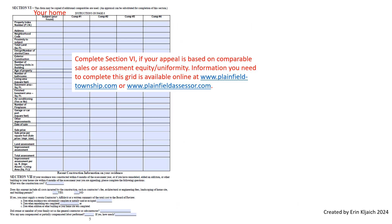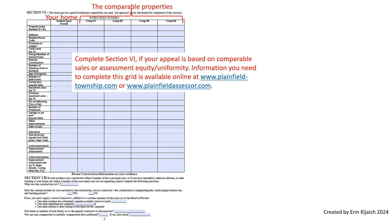On page 5 of the appeal form is the grid. If your appeal is based on comparable sales or assessment equity or uniformity, you need to complete the grid. Information about your property goes in the column titled Subject. The information about your comparable properties goes in the other columns. You may choose any properties you want to include on your grid. Keep in mind the Board of Review will give the greatest weight to properties that are most comparable to yours. Information you need to complete the grid is available on our website.